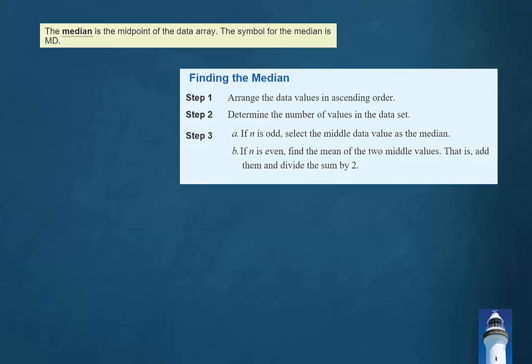If that number is odd, then the median will be the middle data value in the data set. But if there are an even number of data values in a data set, then there would be no middle value. So what we would do is find the mean of the middle two. In other words, find the middle two, add them, and divide that sum by two.